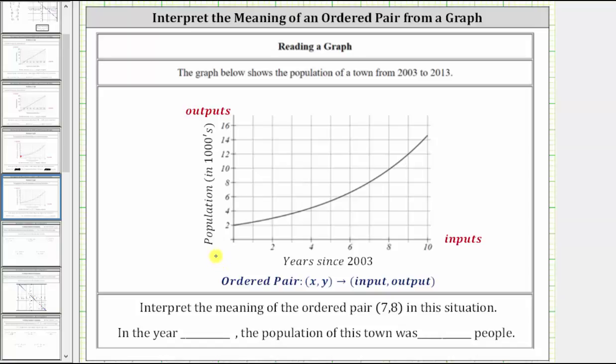We locate 7 on the horizontal axis, go straight up to the graph. This is the point on the graph where the input is positive 7.